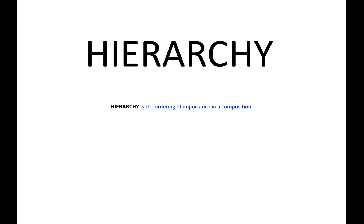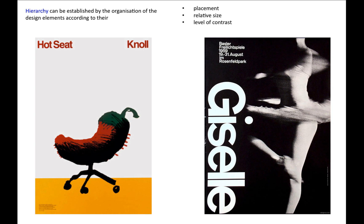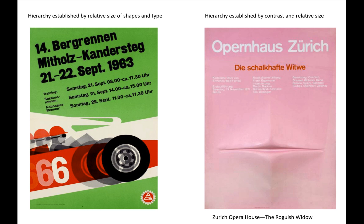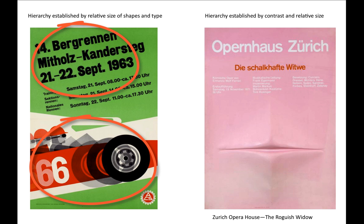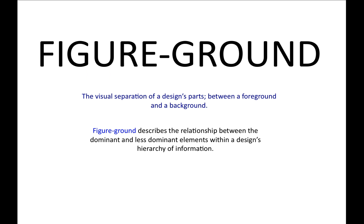Hierarchy is the ordering of importance in a composition. Hierarchy can be established by the organisation of design elements according to their placement, relative size, and level of contrast. Hierarchy established by relative size of shapes and type. Hierarchy established by contrast and relative size.